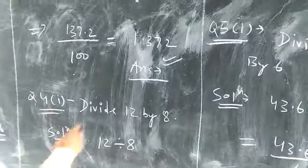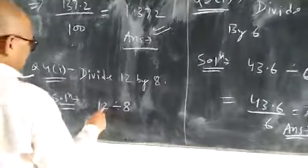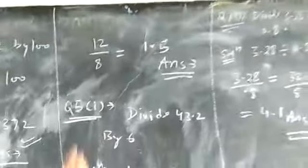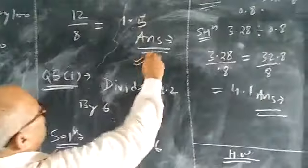Question number 4, first, divide 12 by 8. Its solution will be 12 divided by 8, you will get 1.5. It is the correct answer.